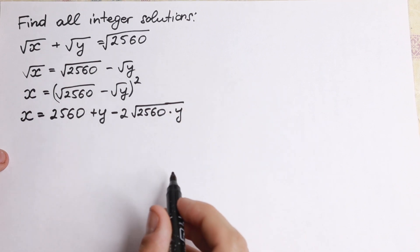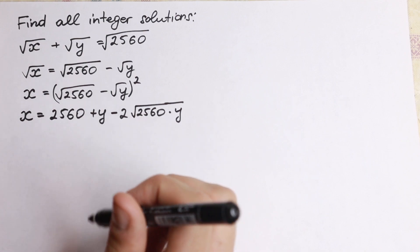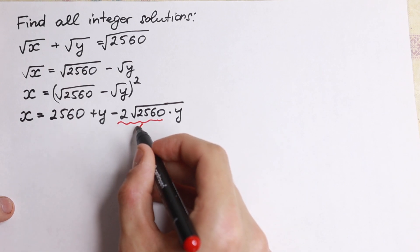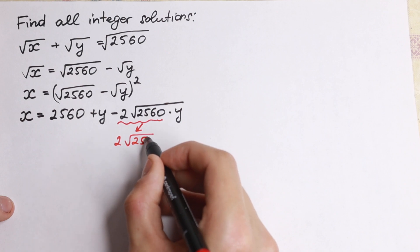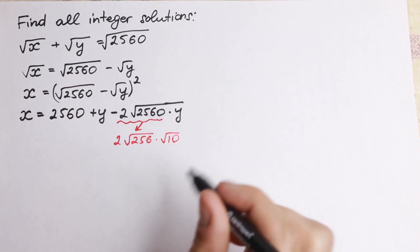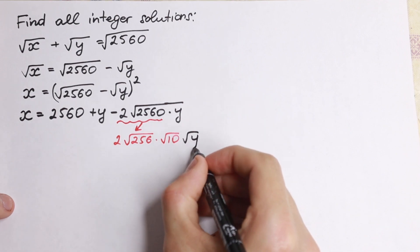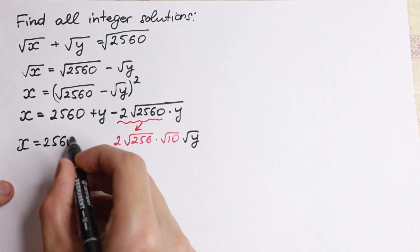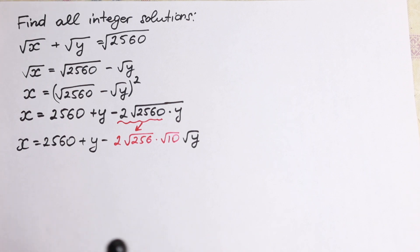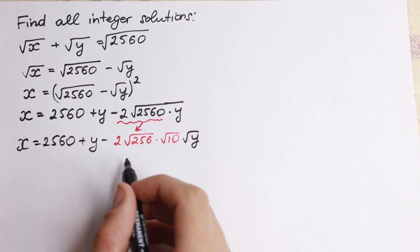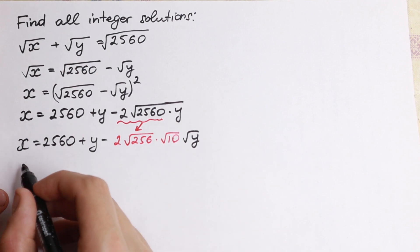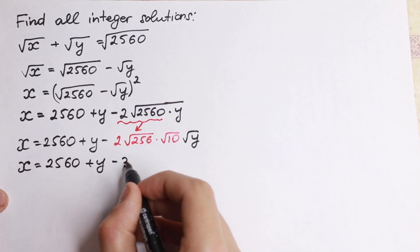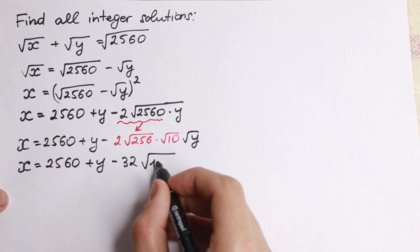We can write the two square roots under one sign. We simplify 2 times square root of 2560 by writing it as 2 times square root of 256 times square root of 10. Since square root of 256 is 16, and 16 times 2 is 32, our expression becomes x equal to 2560 plus y minus 32 times square root of 10y.